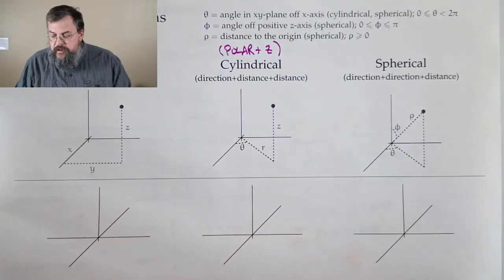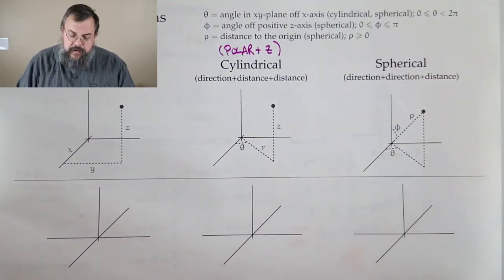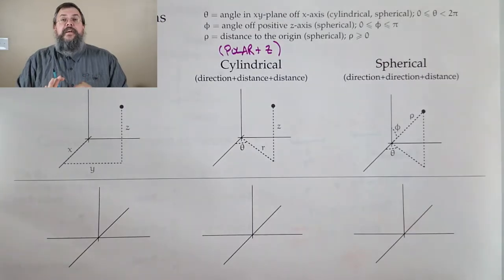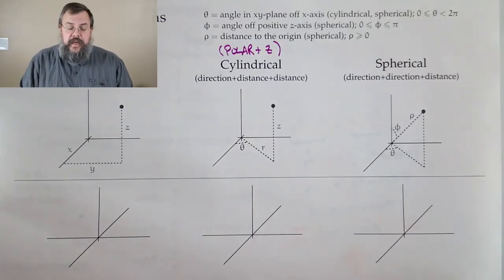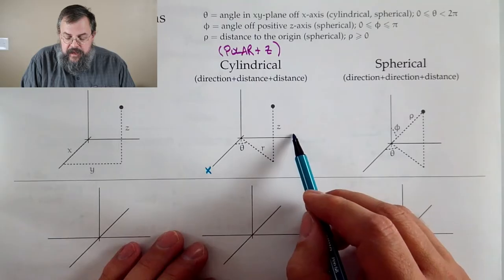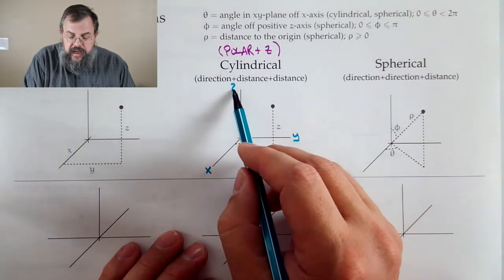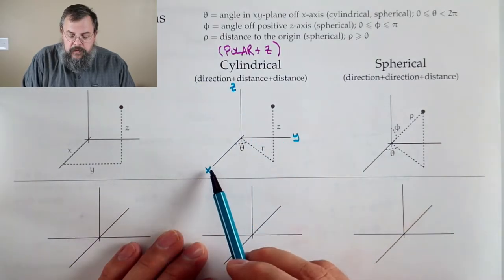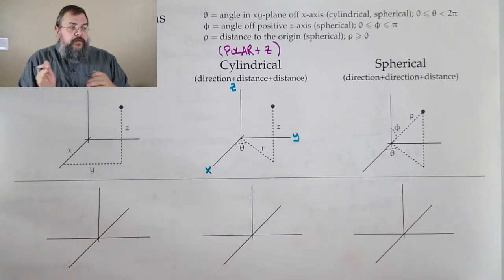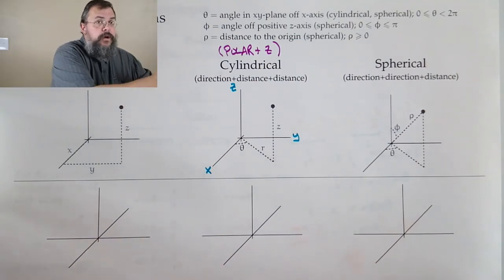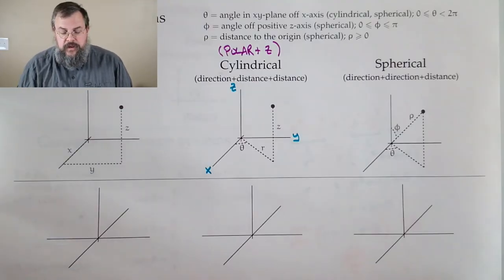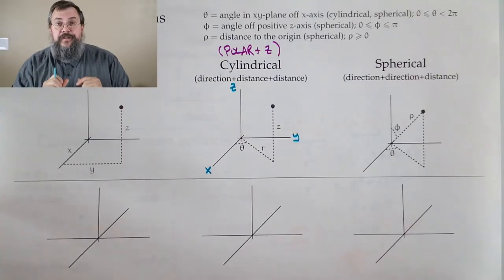Theta is doing the same thing as before — it's an angle off the x-axis. Remembering our x, y, and z axes: from the positive x-axis, we move an angle theta pivoting, move forward by r, then move up by z. That's how we get to our desired location.